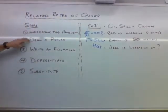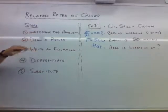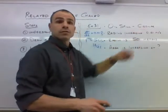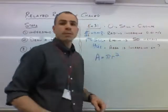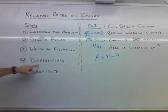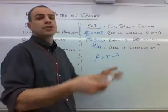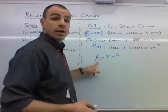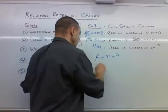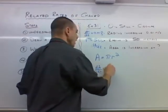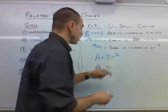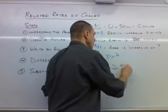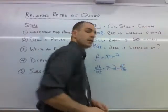I didn't draw a picture but I do understand the problem — if you need to draw one you absolutely can. Now we write the equation: we have the area of a circle, A = πr². We need to differentiate this. The area derives to dA/dt. Pi is just a coefficient and stays. r² derives to 2r, and because we're differentiating the variable r with respect to time, we need dr/dt.